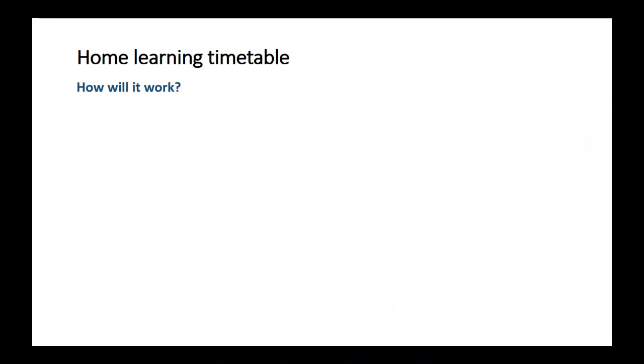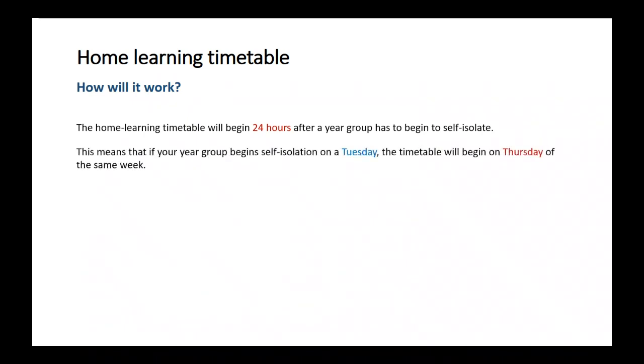So how will the home learning timetable work? Well, if your year group goes into self-isolation, the timetable will begin 24 hours after your year group has begun to self-isolate. So this means that if you begin self-isolation on a Tuesday, the timetable will begin on Thursday of the same week.